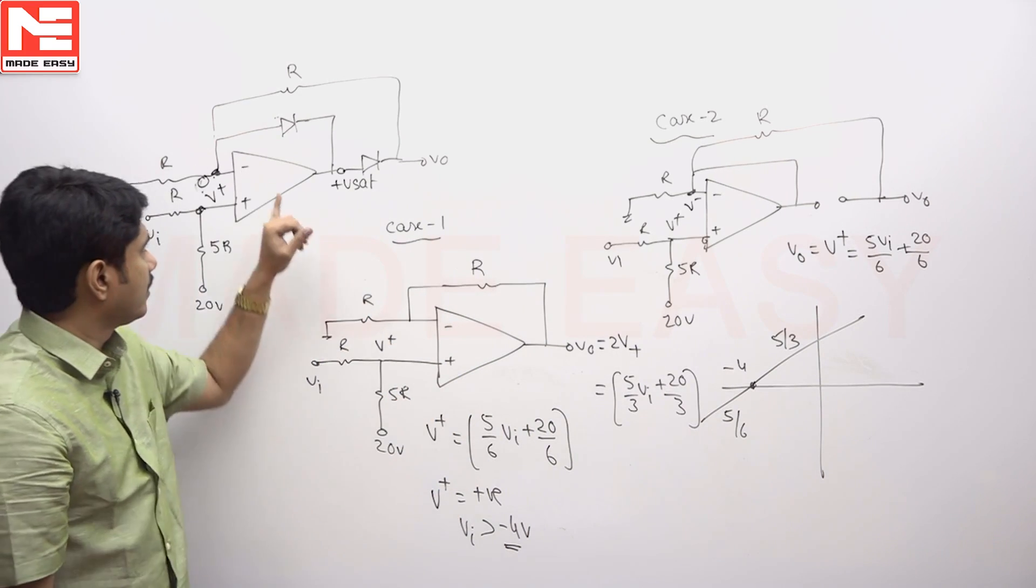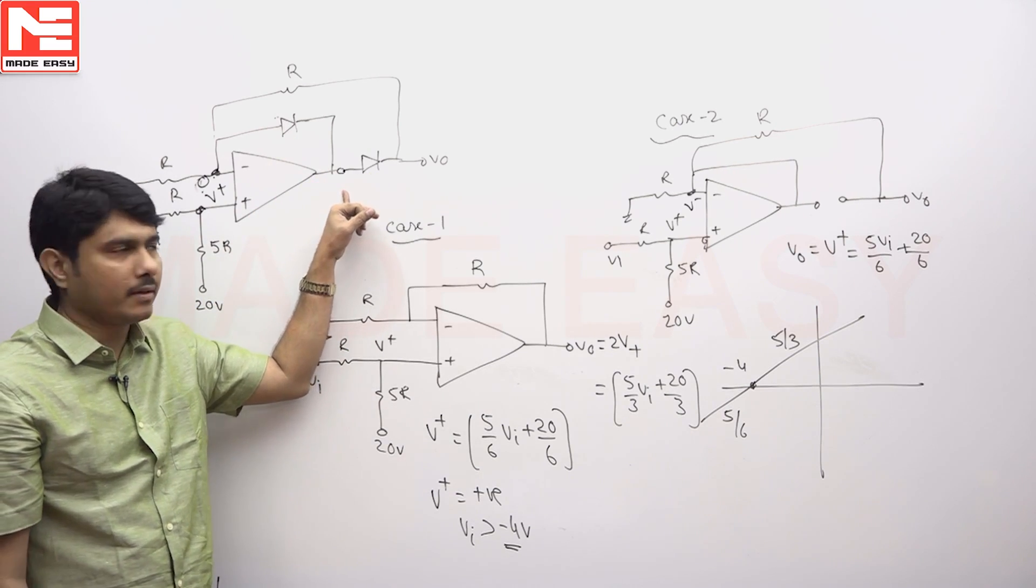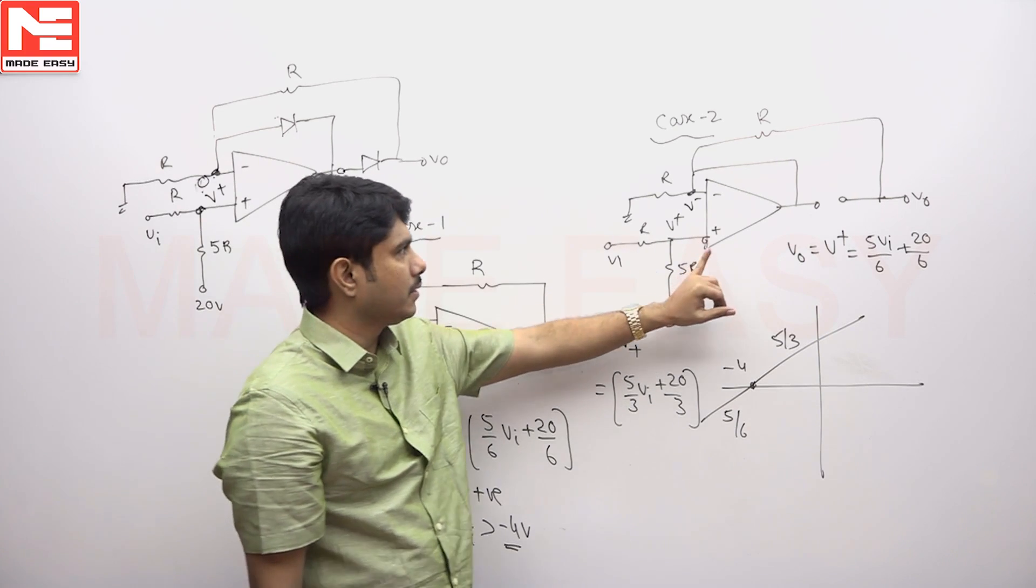Below if you come, this diode will be on. Negative side action is minus V sat will come. So this will be on, this will be off, reverse action. That looks like this, case 2 model.